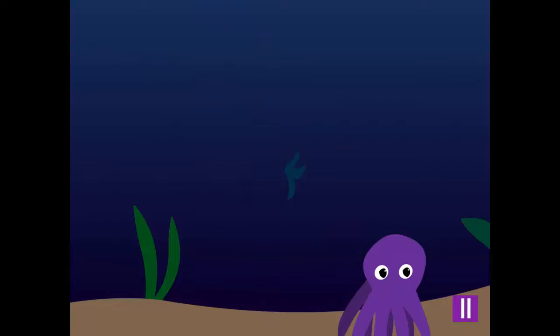An octopus is an animal that has a soft body with eight long arms. They are quite smart and live near the ocean floor. They can swim very fast when they need to.